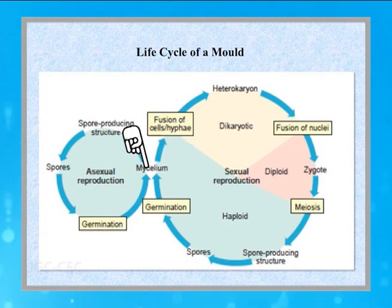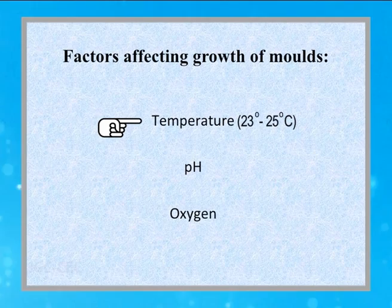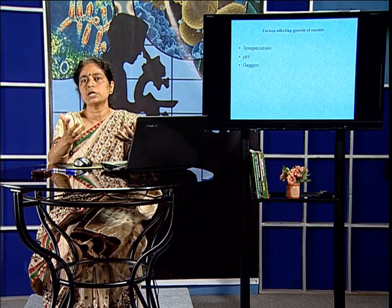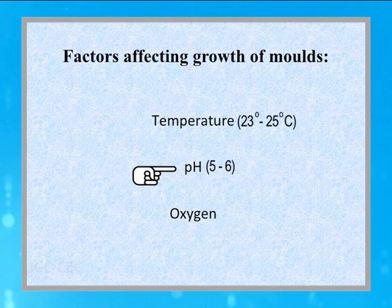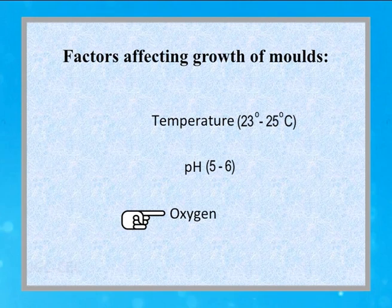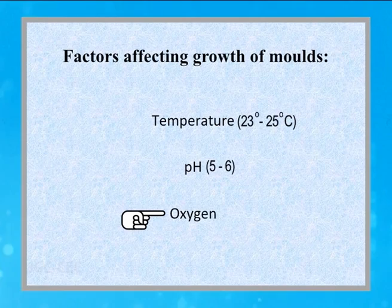There are three important factors affecting the growth of mold. The first is temperature — 23 to 25 degrees Celsius is most appropriate for mold growth, which is why we find cottony mass growing over household food items left as they are. The second factor is pH — a pH of 5 to 6, meaning an acidic pH, is mostly favored by mold growth. The third factor is oxygen — fungi are aerobic in nature and need oxygen for growth, survival, and reproduction.